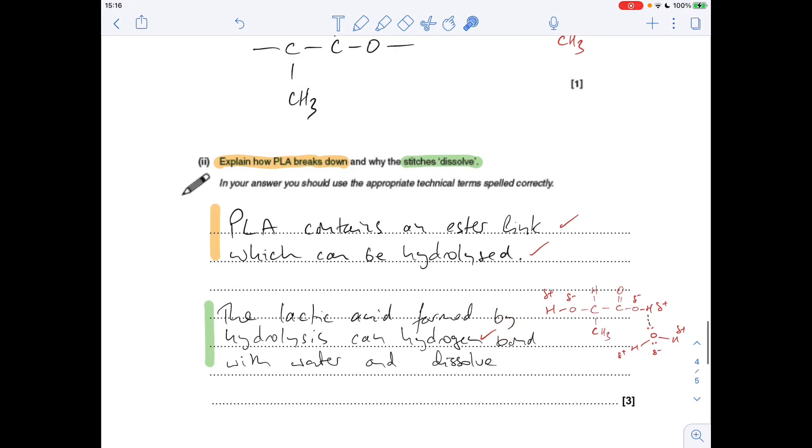And then the next part, explain how PLA breaks down and why the stitches dissolve. So there's kind of two questions there. Explain how it breaks down. So PLA, the reason it breaks down is because it contains an ester linkage. Or you could say because it's a polyester. And these groups can be hydrolyzed. So esters can be hydrolyzed, broken down by a reaction with water. That would create, it would actually recreate the lactic acid molecule, which I've drawn there. And then lactic acid, because of the functional groups in it, it can hydrogen bond with water. And so it can dissolve.